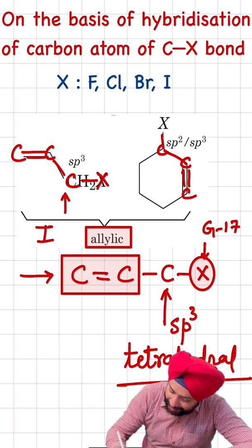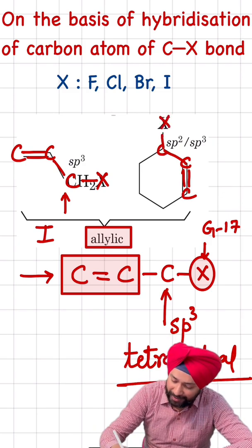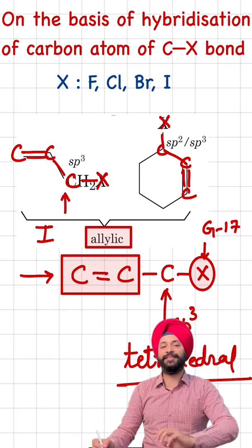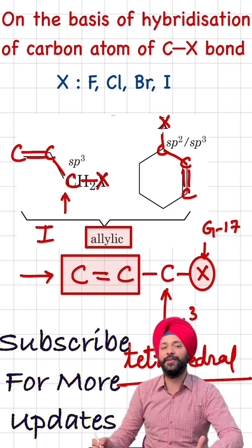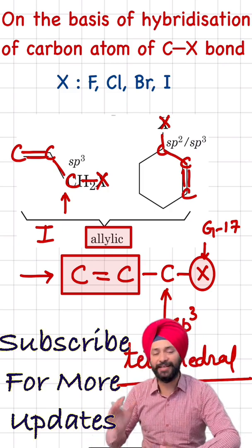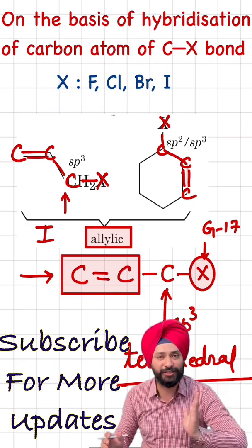In the second case, if you see this carbon-carbon double bond is directly attached with the C-X bond, so in this case also, whether it is a cyclic part or an aliphatic part, this concept is valid. C-X bond is directly attached with C double bond.